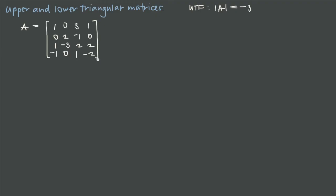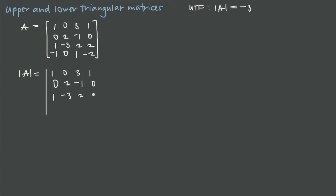For lower triangular form, we want to zero out entries above the main diagonal. We set up the determinant equation to track scalars. The matrix entries are: 1, 0, 3, 1 / 0, 2, −1, 0 / 1, −3, 2, 2 / −1, 0, 1, −2. Instead of working from the upper left, we work from the lower right, starting with the −2 entry.